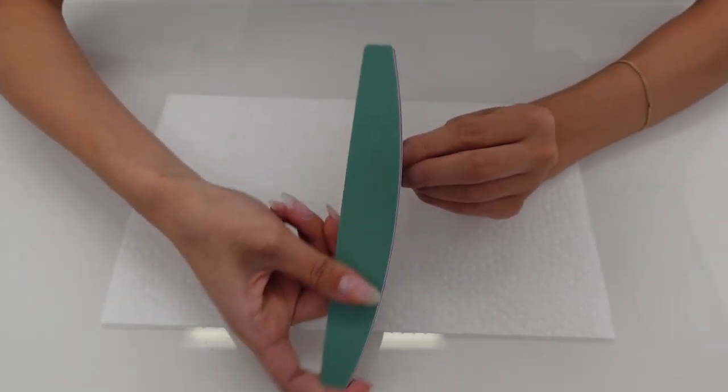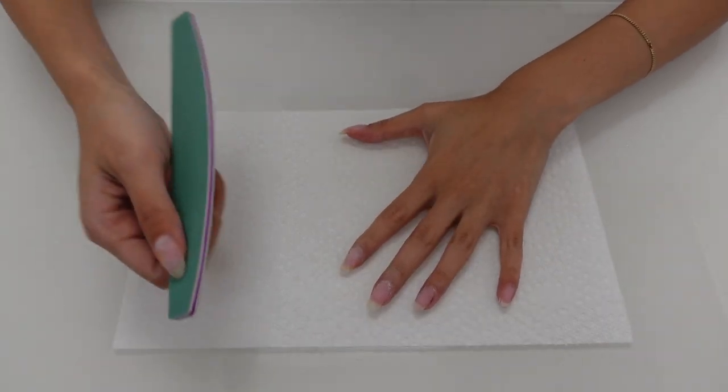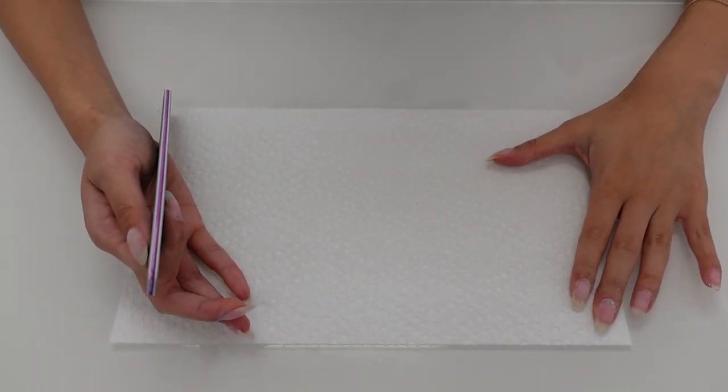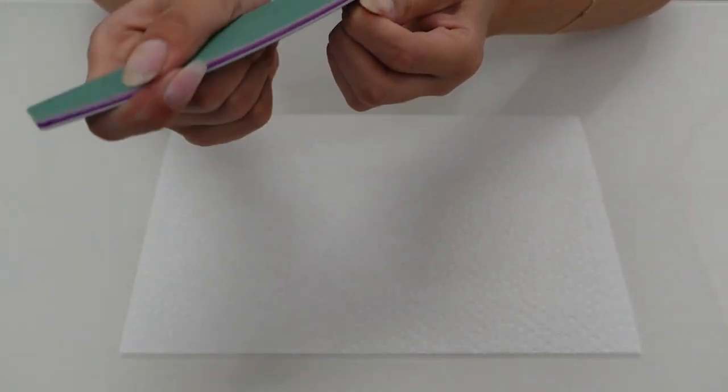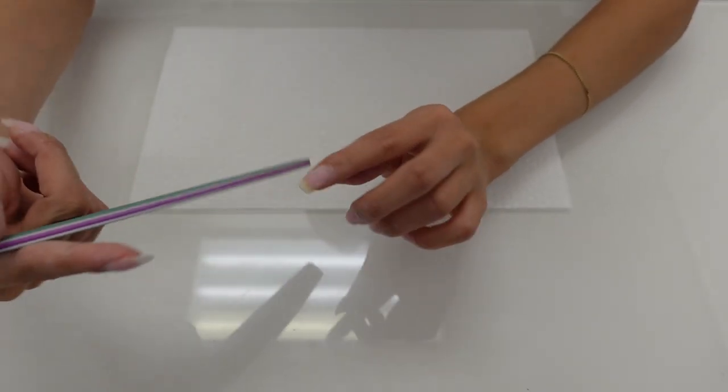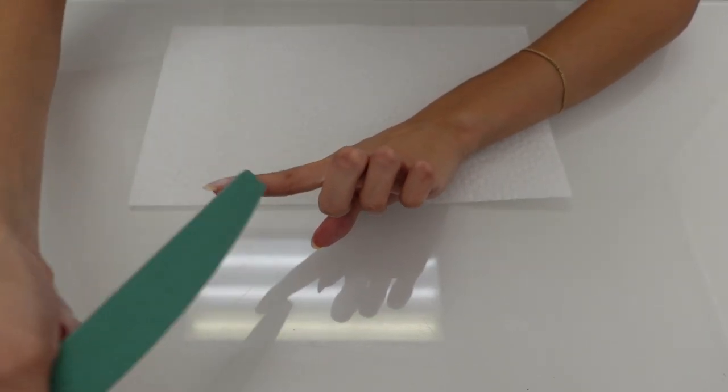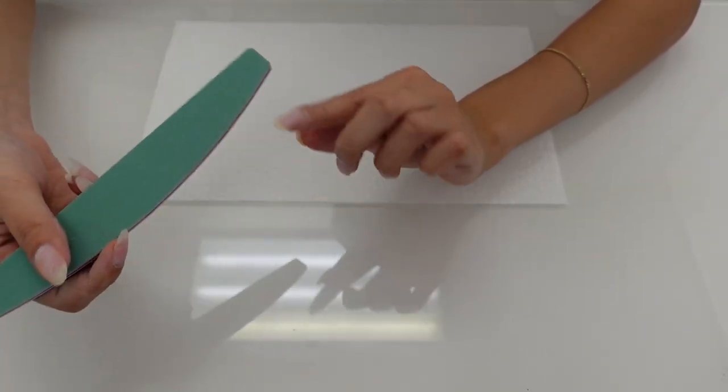The reason why I have this paper towel is so that we don't get dust everywhere. We can clean up easier. As you can see, once I file it off, that gel tip thins out and just pops right off eventually.